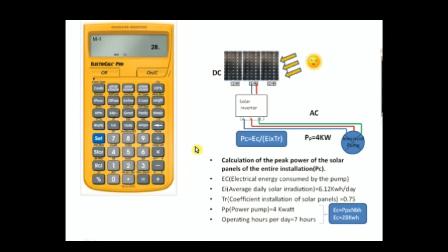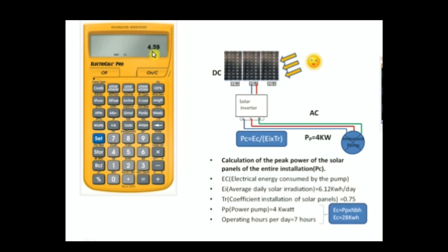We're going to click on Store and save it in memory slot one. Now we have the electrical energy stored. We start the calculation of the denominator: the average daily solar irradiation, which is 6.12, multiplied by the coefficient of installation of the solar panel, which is 0.75.